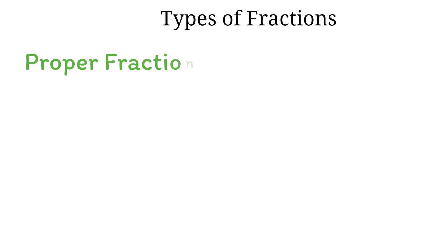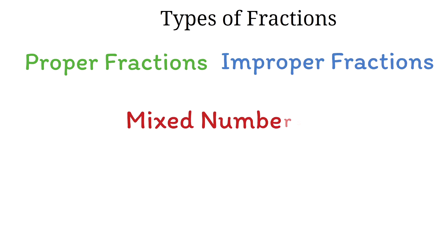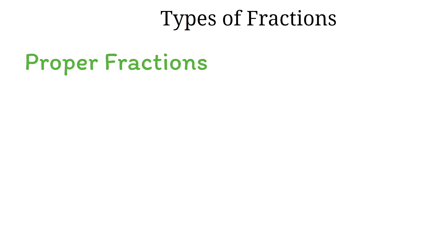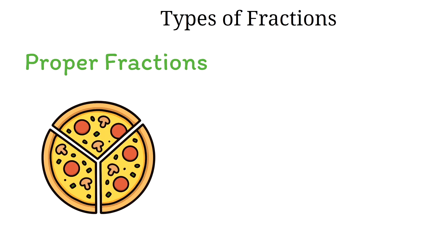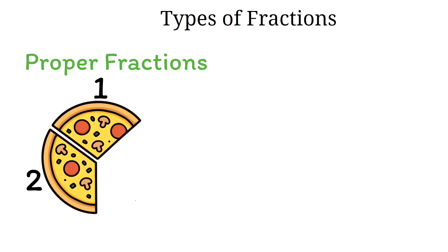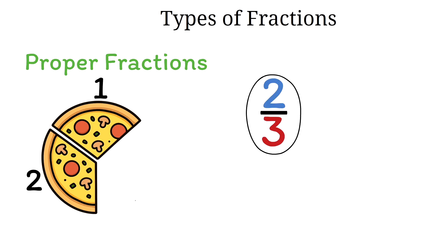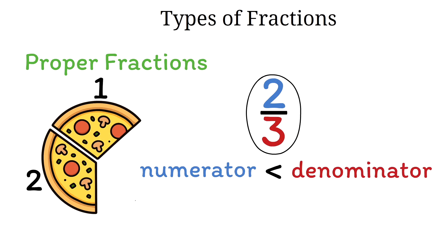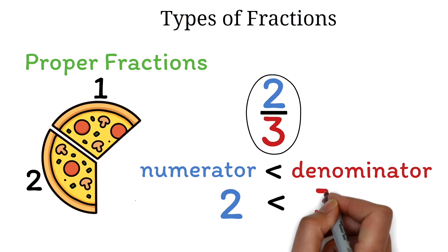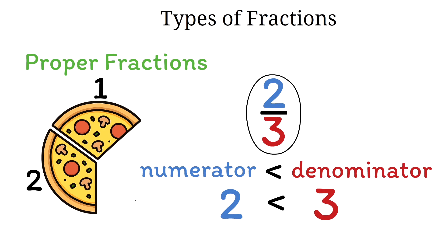There are 3 types of fractions: proper fractions, improper fractions, and mixed numbers. First, we'll talk about proper fractions. Let's say you have another pizza, and this pizza is cut into 3 equal slices. If you take one slice, there will be 2 slices left out of the 3 that were available. This 2 over 3 is a proper fraction. A proper fraction is a fraction where the numerator is less than the denominator. In our example, the numerator, which is 2, is less than the denominator, which is 3, so it is a proper fraction.